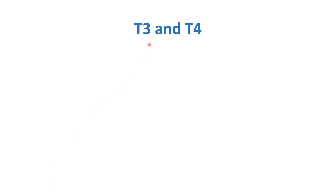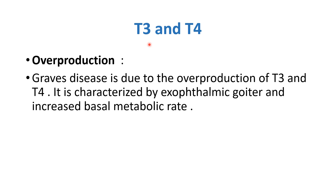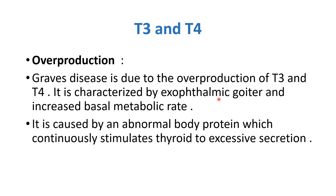Now let's discuss T3 and T4 related anomalies. The first anomaly is overproduction, which causes Graves' disease. It is characterized by exophthalmic goiter and increased basal metabolic rate. It is caused by an abnormal body protein which continuously stimulates the thyroid to excessive secretion. Graves' disease is an autoimmune disease.